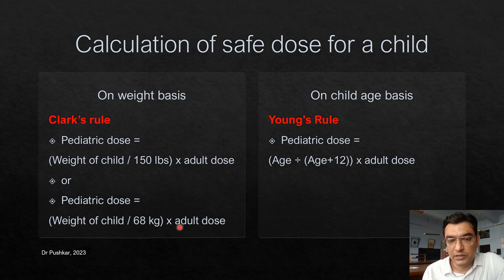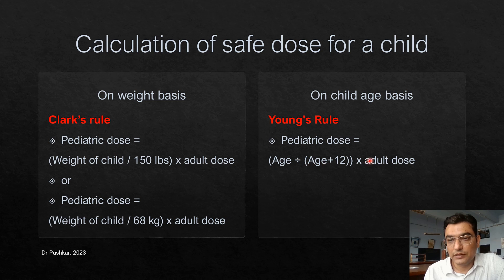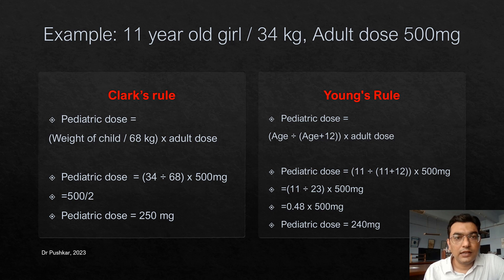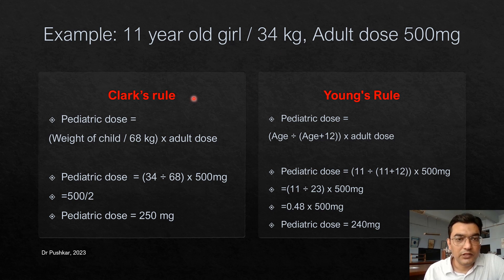For example, if the child weighs 34 kg, divide by 68 and multiply by the adult dose. For Young's formula: age divided by (age plus 12), multiplied by adult dose. Using an example of an 11-year-old girl weighing 34 kg with an adult dose of 500 mg — applying Clark's Rule: 34 divided by 68, multiplied by 500 mg.